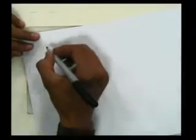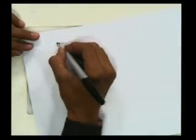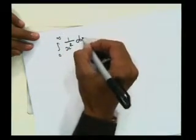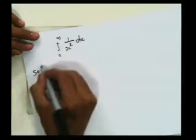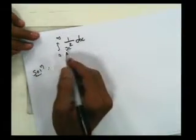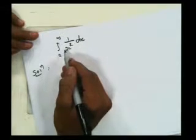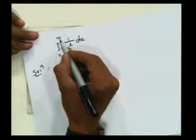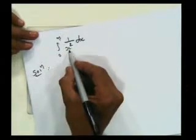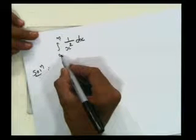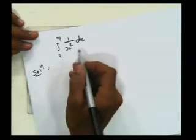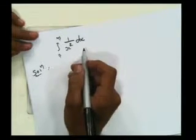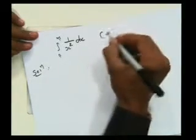The question is: integration from 0 to infinity of 1 upon x squared dx. Observe that this is the first kind of improper integral because the upper limit of integration is infinite, and the function is discontinuous at x = 0, so it is also of the second kind. Any integral which is of both first and second kind is known as the third kind. So this is the third kind of improper integral.